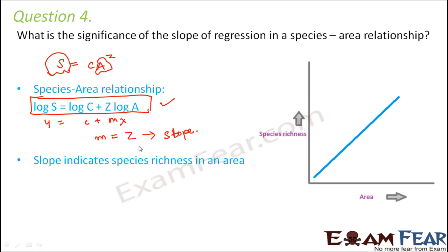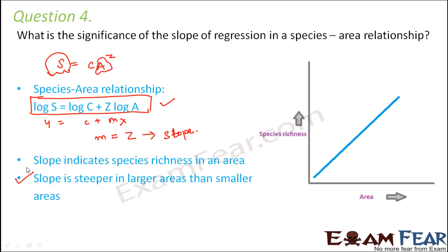The significance of the slope: what does a steeper or less steep slope tell us? The slope indicates the species richness in an area. If the slope is steeper, the value of Z is higher, meaning we are actually finding the species-area relationship for a larger area. For a smaller area, the slope will be smaller and less steep. So by looking at the slope of the line, we can determine which area we are looking at.